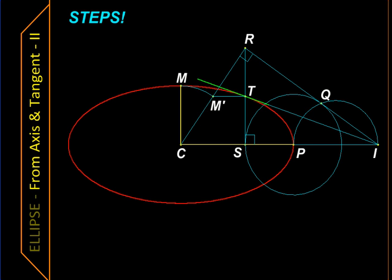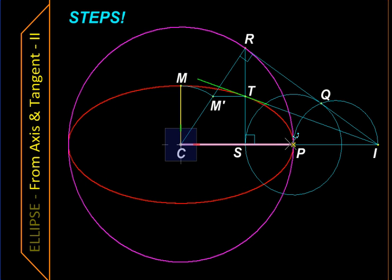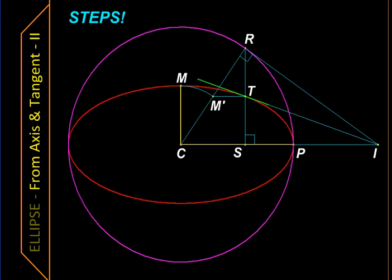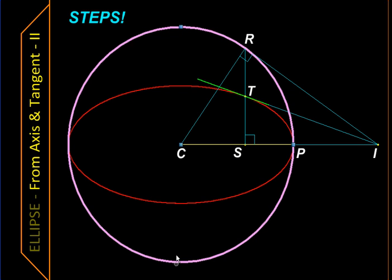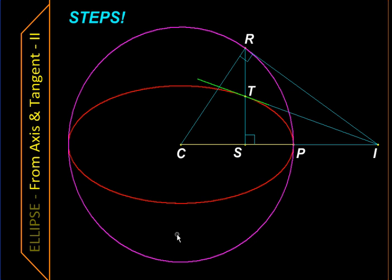Our construction is over. But just to connect it to the other construction we had seen, I draw a circle with C as the center, concentric with the ellipse, with CP as the radius. You can see it passes through point R — that is why CR was referred to as the radius of this circle. Now let us see why this construction works. An ellipse is nothing but a circle that is compressed or scaled in one direction, and everything else follows.